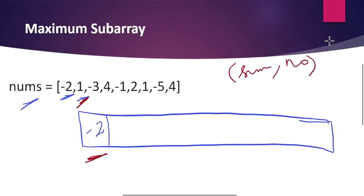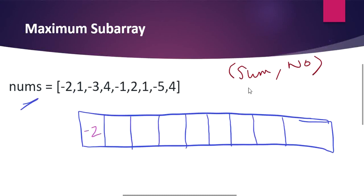When you move to the second element, you get to choose one option: either extend your sum by adding this number to the previous sum, or this number itself is higher than the extended sum. Every time you ask: can I extend the maximum sum by adding this number to the previous sum, or is this number itself a greater value? Now we filled our array with minus 2 and we move on to the next number 1. Adding 1 to minus 2 gives minus 1, but 1 itself is greater, so we stick with 1 and fill 1 here.